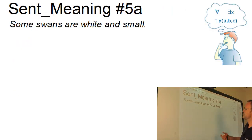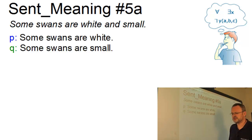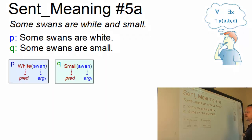Here is our first sentence, some swans are white and small. And our first sentence constitutes a complex proposition which can be broken up into two simple ones linked by and. p, some swans are white and q, some swans are small. Both propositions can be converted into simple predications which both involve a one place predicate which assigns the attributes white and small to swan. But how do we integrate the set sum into our predication?